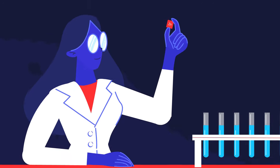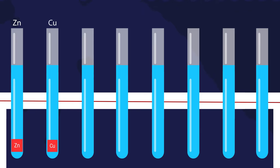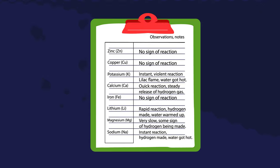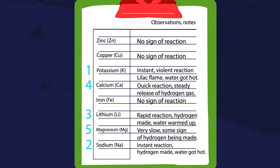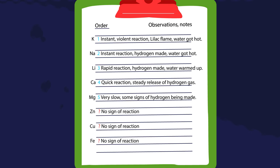First, let's look at the results when a small amount of each is dropped into cold water in a test tube. Stop the video to study the results and then try to rank the metals from most to least chemically reactive. How did you do? From the results, some can be ranked, but others appeared to be the same. Let's rewrite the list.